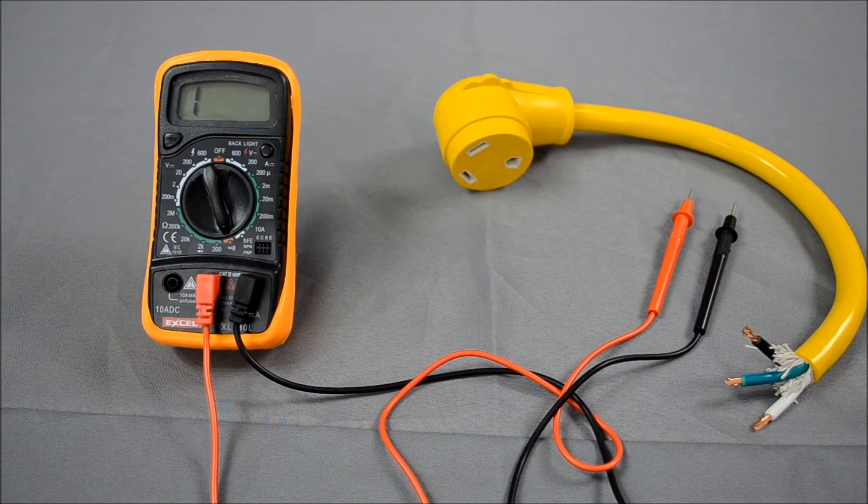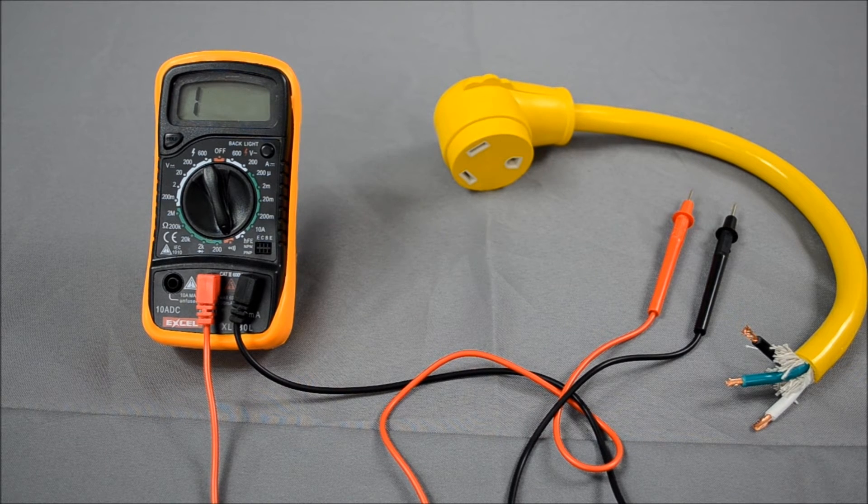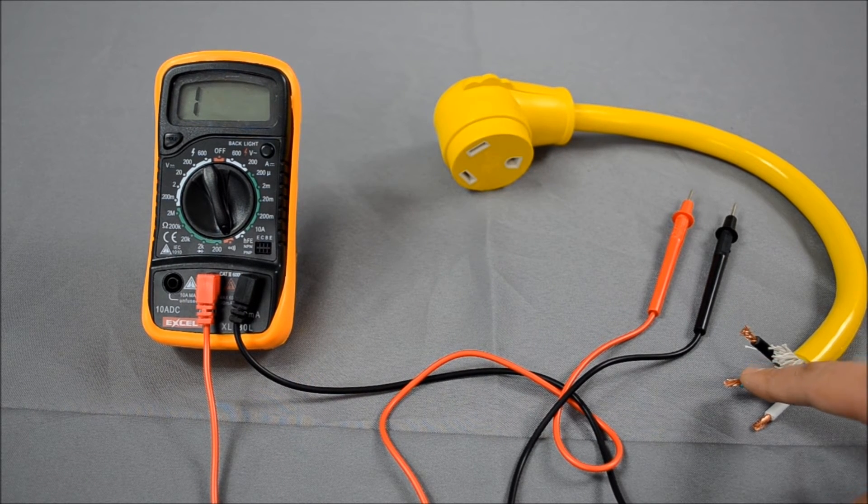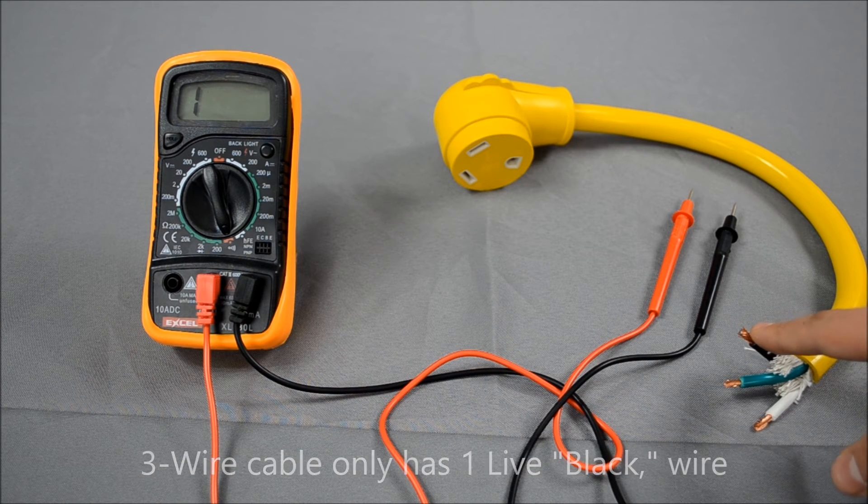Now that we have our multimeter in place and our power cord ready, it's important to understand that each cord may have more wires—there could be three wires or four wires, generally for RV and generator use. The first thing you want to do is identify the ground pin.